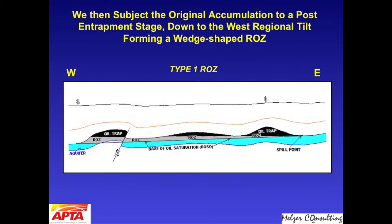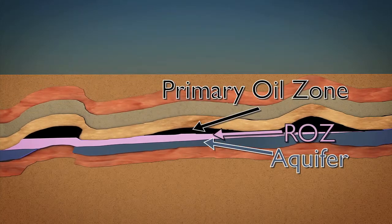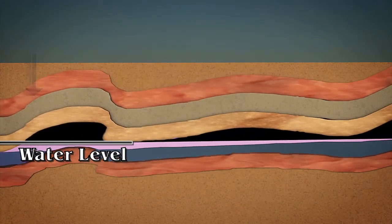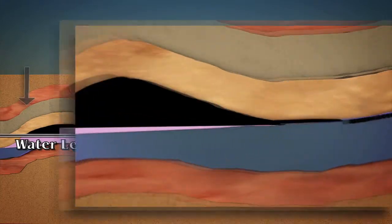Let's go back to Type 1, which is what we're going to concentrate on in this presentation. We have an animation to help you understand how this occurs in the subsurface. In this case, there is a downward tilt — the west side is tilting downward — and you see water encroach vertically upward into that former paleo trap, moving oil out as water fills the pore spaces.